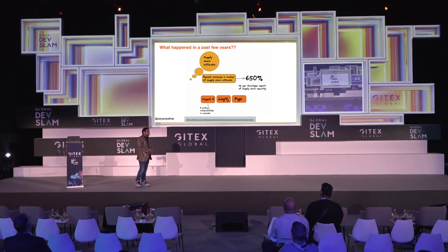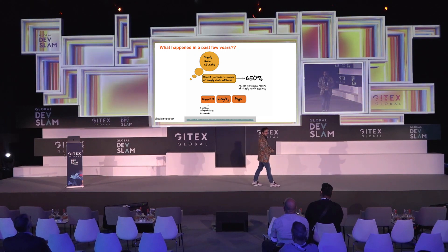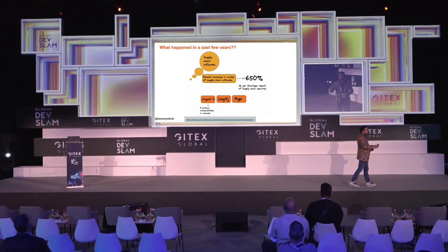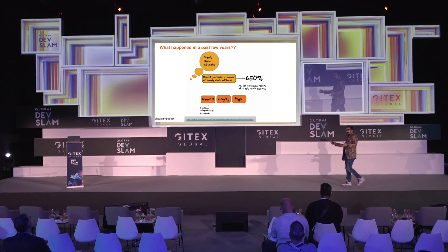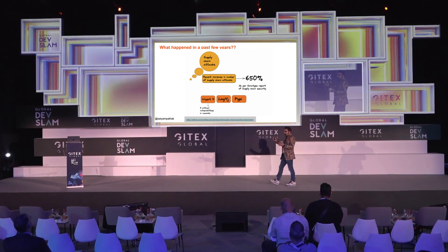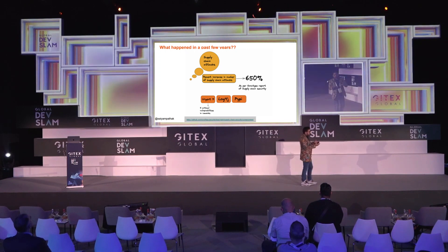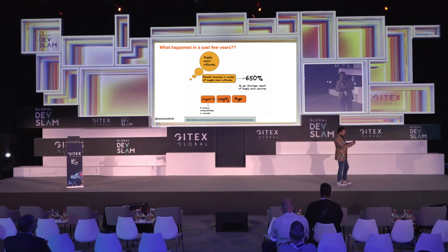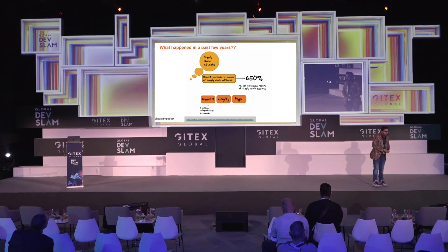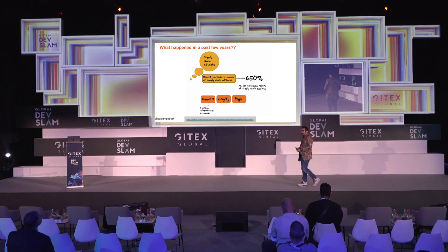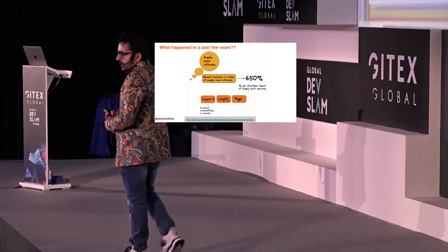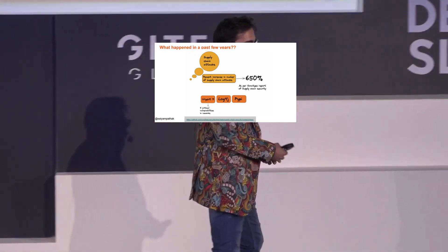Now, what has happened in the past few years and why are we discussing this? The number of supply chain attacks has increased at a massive scale — so much so that governments have had to put out orders requiring solutions for software attacks. The most basic thing we can do is use SBOMs, which we'll be discussing. There was a 650% increase — I think this was the Sonatype report from 2021 — and it may have increased further since then.